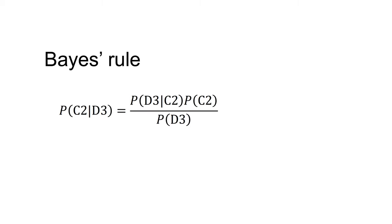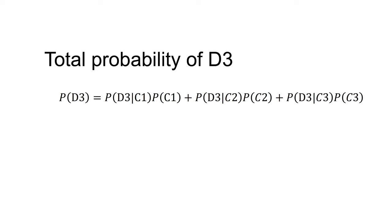We want to know the probability that the car is behind door two given the host opened door three — P(C2|D3). Using Bayes' rule: P(C2|D3) equals P(D3|C2) times P(C2) divided by P(D3). P(D3) is the total probability that the host opens door three, calculated as: P(D3|C1)·P(C1) + P(D3|C2)·P(C2) + P(D3|C3)·P(C3).